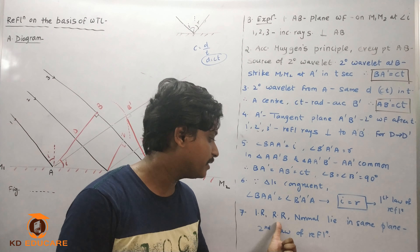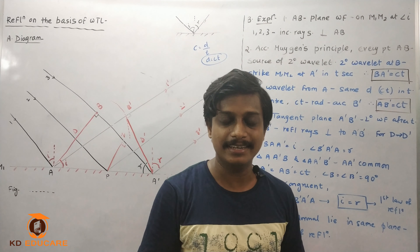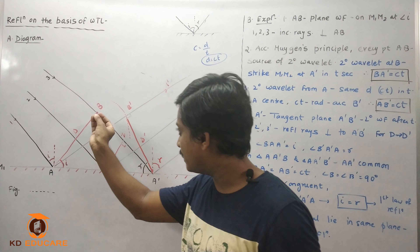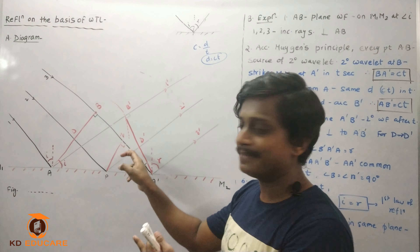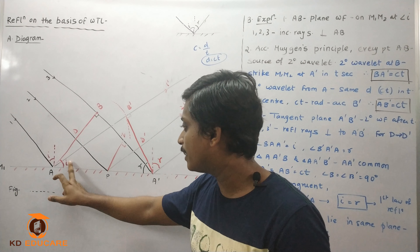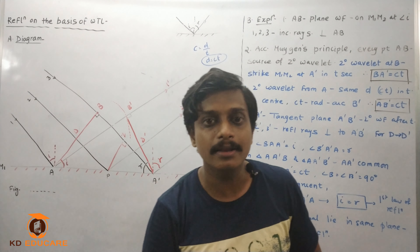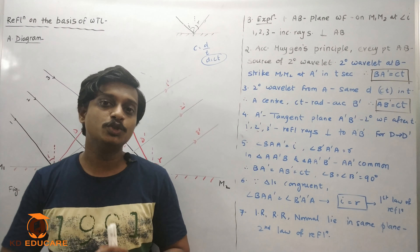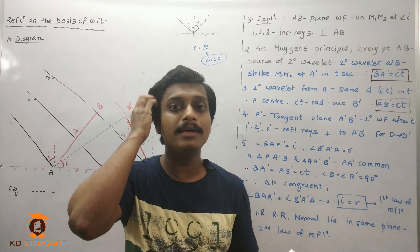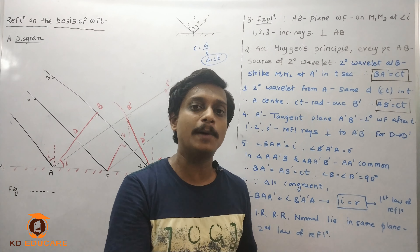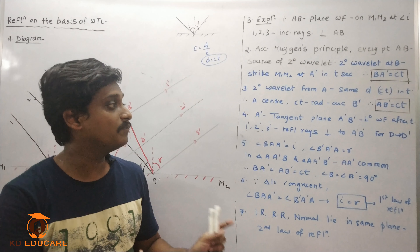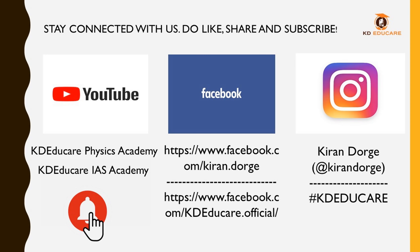Since angle i equals angle r, the first law of reflection is proved. The incident ray, reflected ray, and normal lie in the same plane — this represents the second law of reflection. So here, instead of a single ray, we used a complete wavefront, and proved that i = r. This is reflection on the basis of wave theory of light — an important topic for 2-mark or 3-mark questions in JEE/NEET. Understand this diagram and the calculation properly.